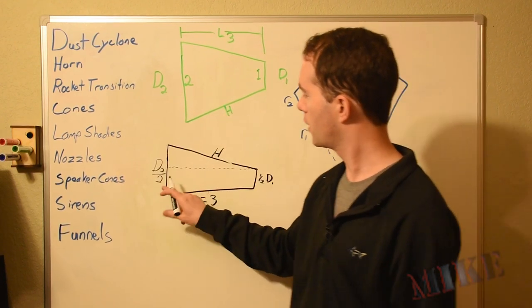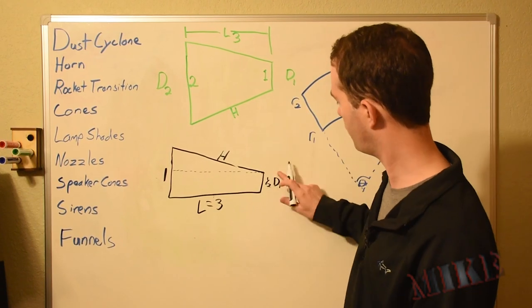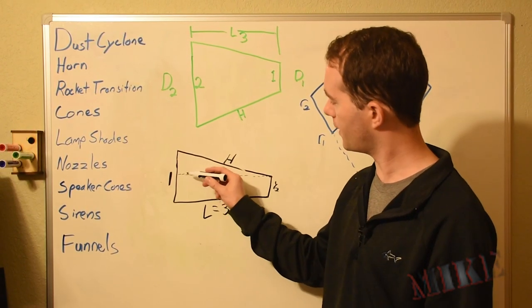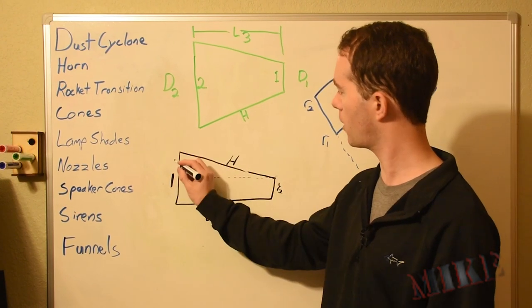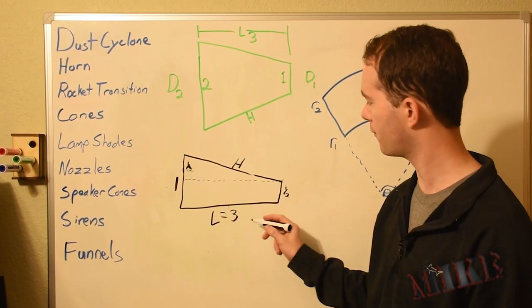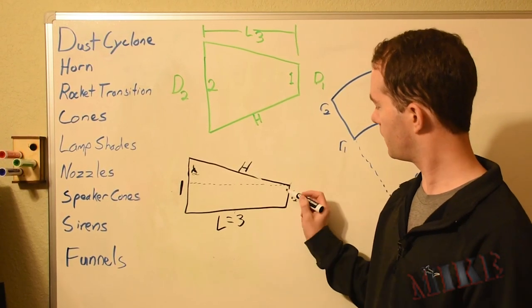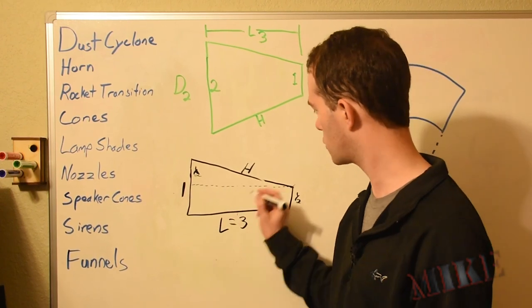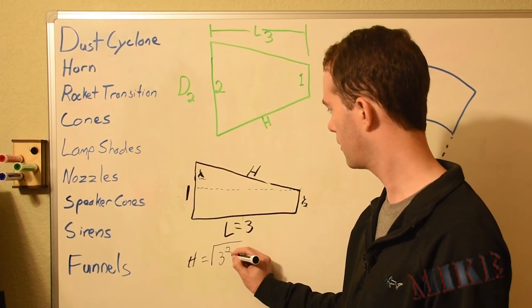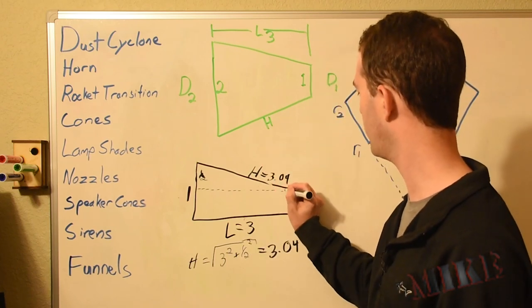So from our example here, D2 over 2, we know this is 1. This side is 1. One half of D1 is just 1 half. And this is 3. If we draw this parallel line here, then this height is 0.5. This segment here is 1 half. So we know the slope of this line. Pythagorean theorem says that we can use A squared plus B squared is C squared. So H is the square root of 3 squared plus 1 half squared. So H is 3.04.